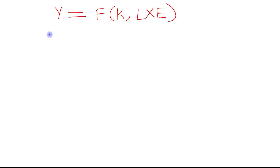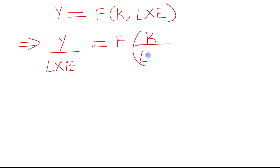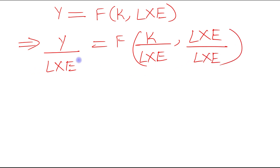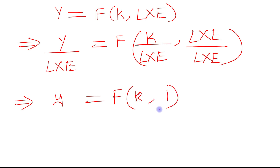In per effective worker terms we can write this equation as y divided by L times E equals a function of k divided by L times E. So in per effective worker terms, output per effective worker is a function of capital per effective worker.